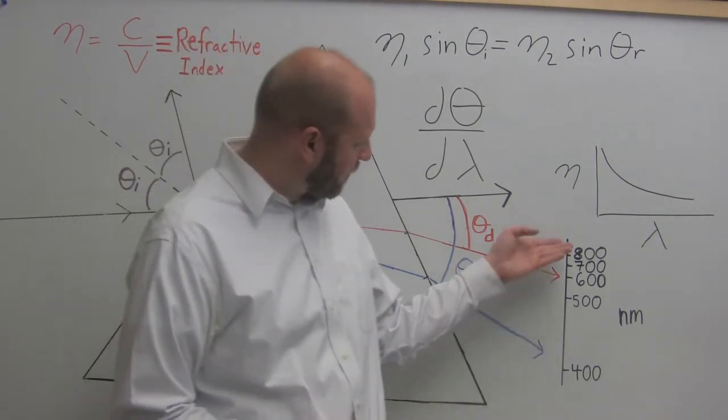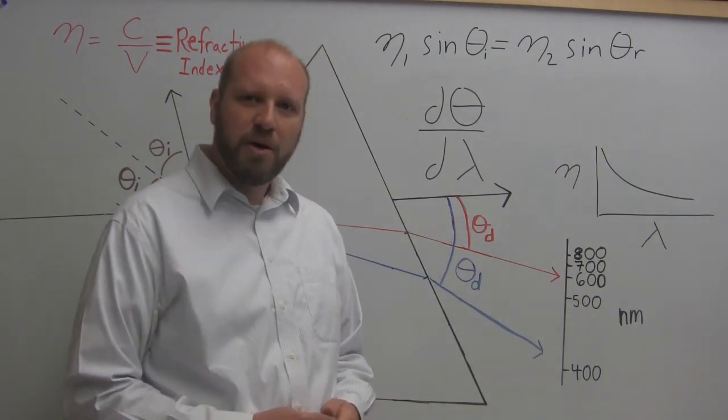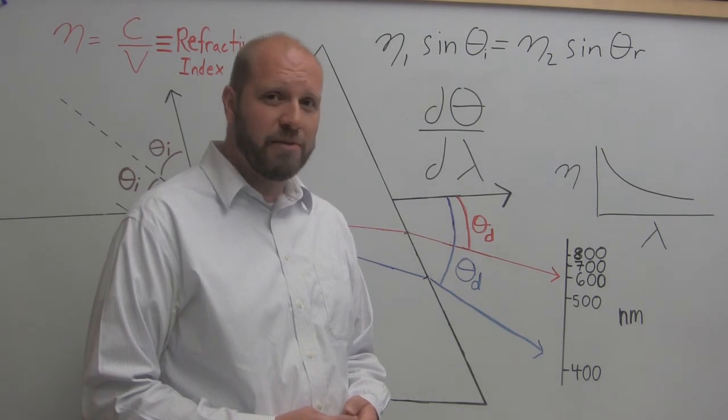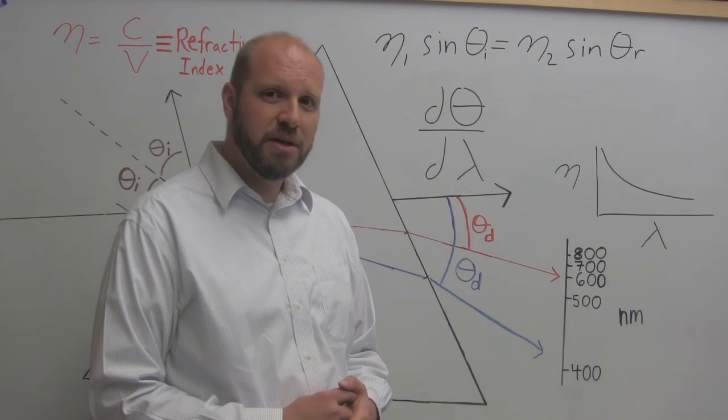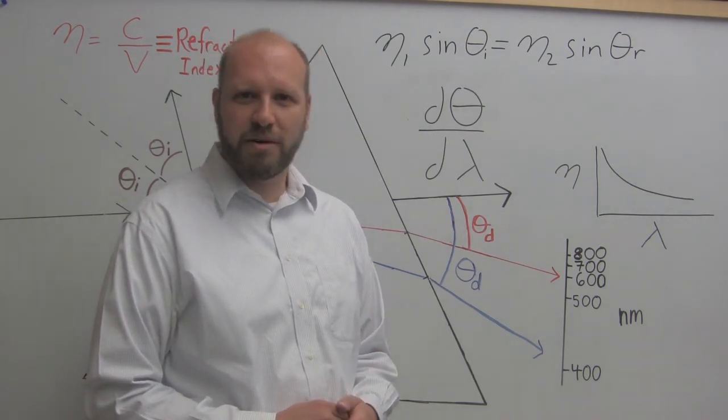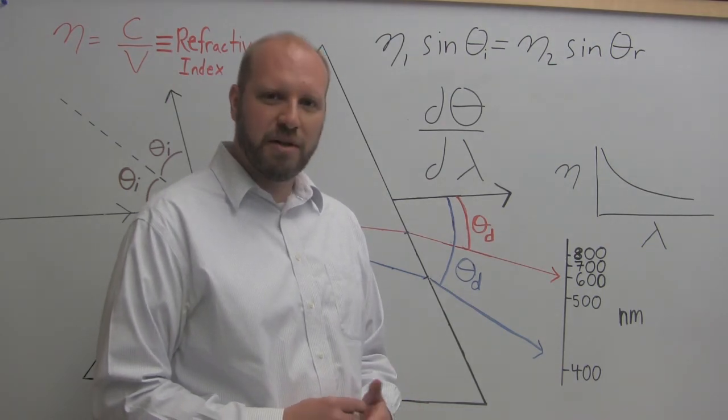Now prisms don't have a linear angular dispersion. It varies as a function of wavelength. But they work over extremely large wavelength range, meaning if you're doing spectroscopy over a large wavelength range, prisms have advantages. Additionally, prisms don't have overlapping spectral orders as compared to diffraction gratings. This means that you can get simpler instrumentation and they work really well.